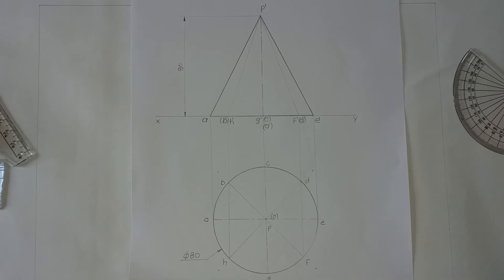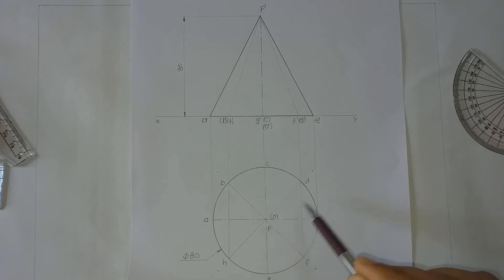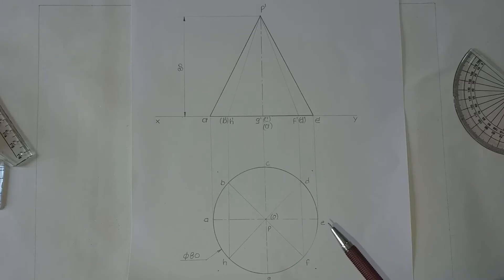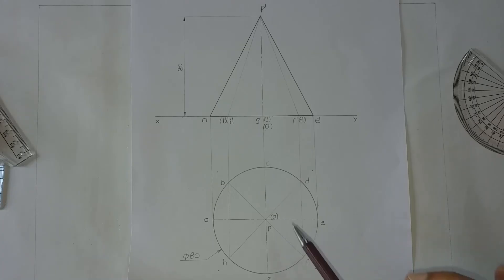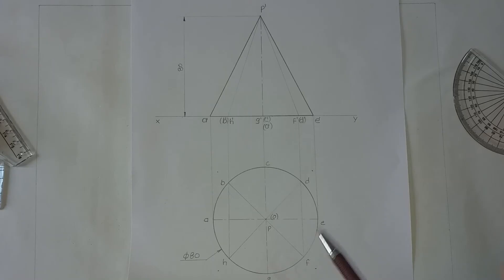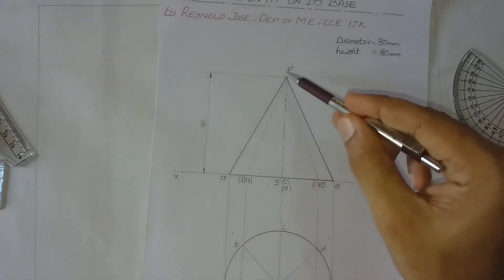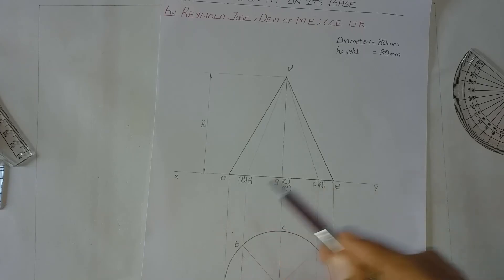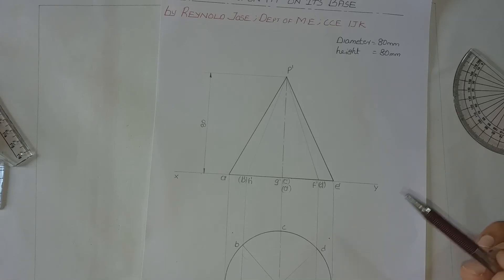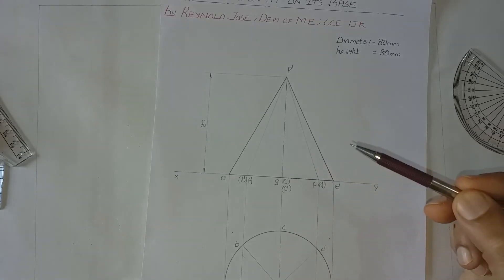Regarding the top view: inside it you can see around eight lines, and all these lines represent generators. You are not supposed to draw them using Type A lines — that is continuous thick lines. They must be very light, because a cone doesn't have any edges. In the front view also, the lines inside the outline must be of Type B nature — that is, they must be thin and not dark. The axis also must be somewhat less in darkness.